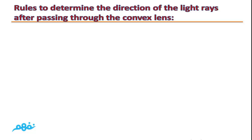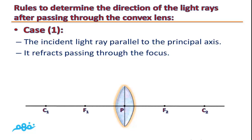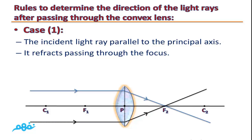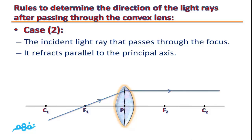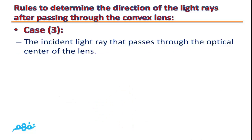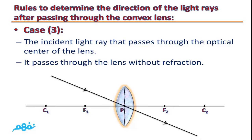Rules to determine the direction of light rays after passing through the convex lens. Case 1: the incident light ray parallel to the principal axis refracts and passes through the focus. Case 2: the incident light ray that passes through the focus refracts parallel to the principal axis. Case 3: the incident light ray that passes through the optical center of the lens passes through the lens without refraction.